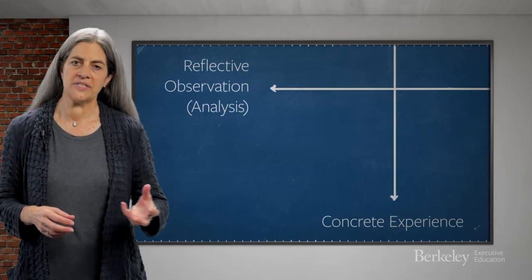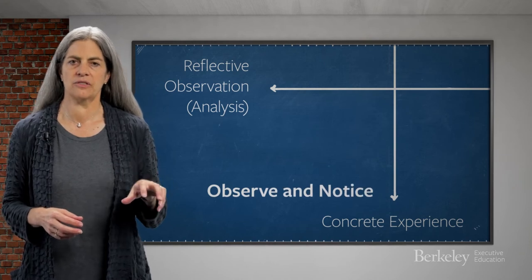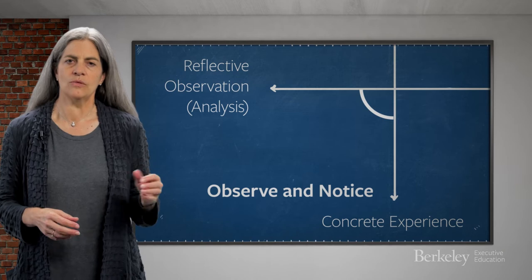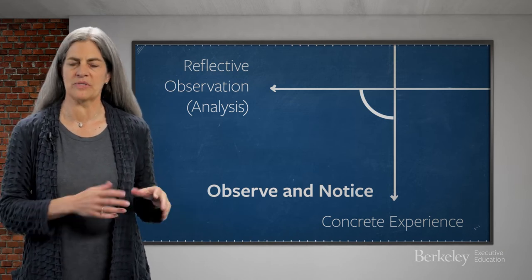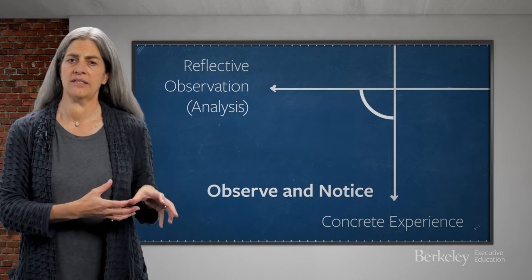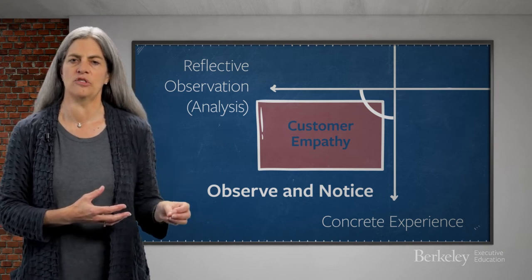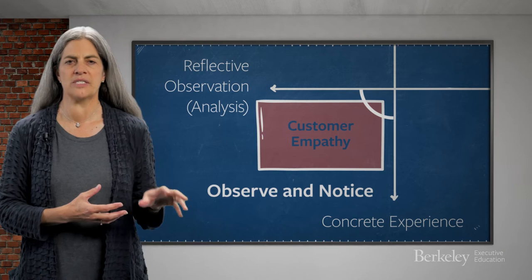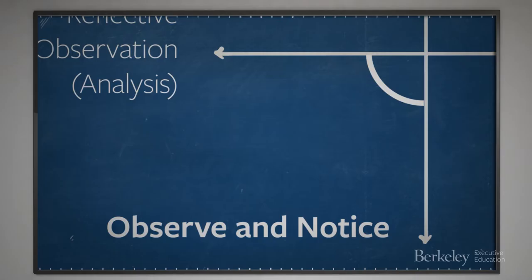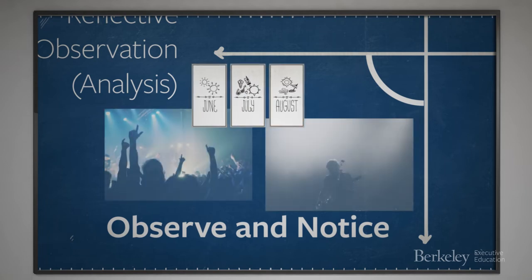Let's look at the four innovation capabilities framed by this matrix. In the lower left-hand quadrant, where reflective observation and concrete experience intersect, we observe and notice. We take in information in a wide variety of forms about the world around us. In the case of product managers, this is the quadrant in which you develop empathy for your customers and users, where you take in information about your competitors, and where you observe potential trends and discontinuities in the market. In the Shure example, this quadrant was represented by the summer spent observing and interviewing rock bands in both their practice and performance venues.